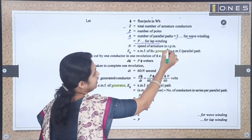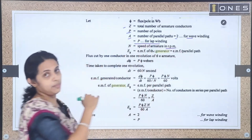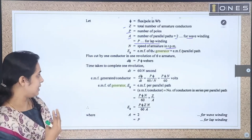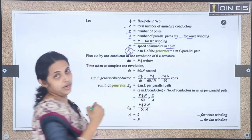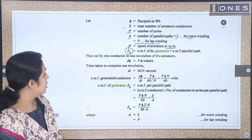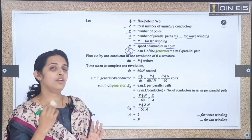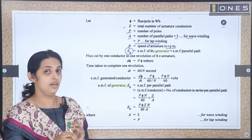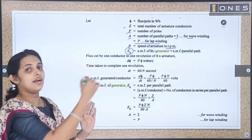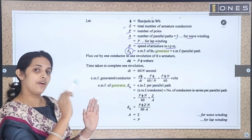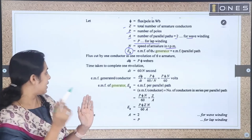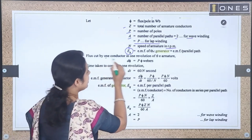Now, n is the speed of the armature in RPM — that is n revolutions per minute. We calculate the EMF value in a parallel path. First, we calculate the EMF value of one conductor in one revolution. In one revolution, the conductor passes P number of poles.